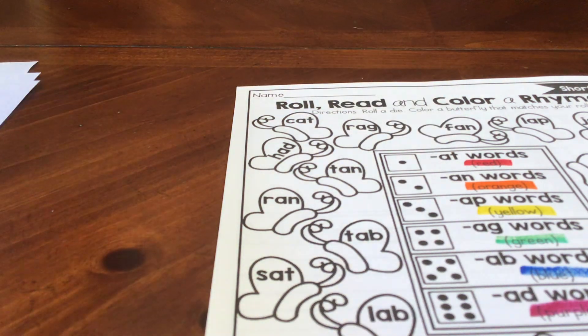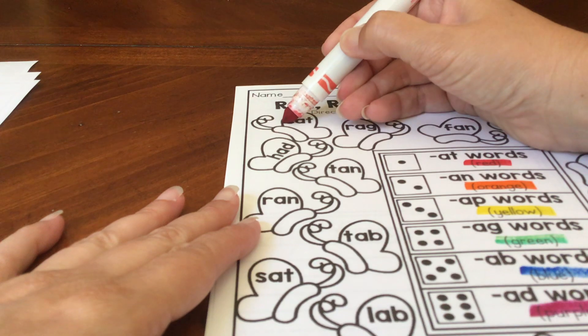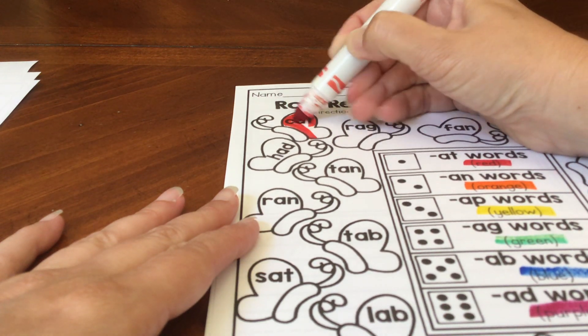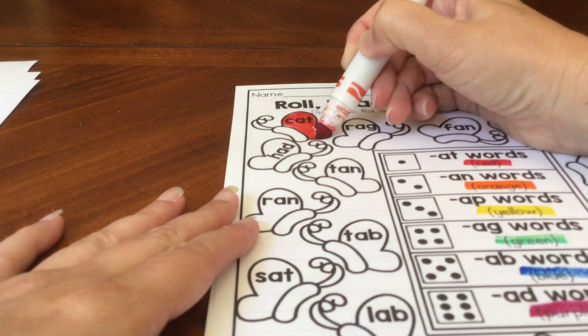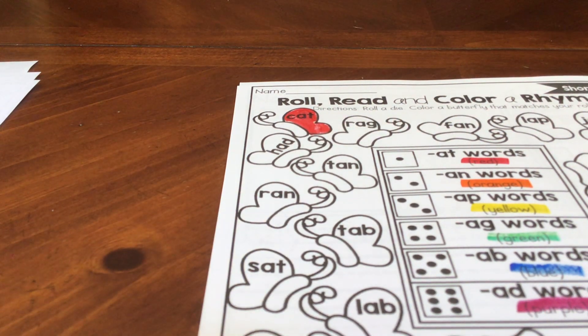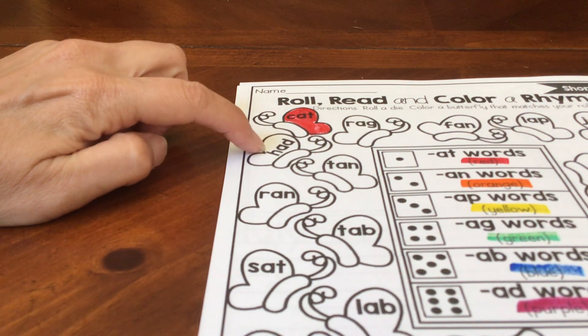Cat. Does that rhyme with at? Yes, it does. So I can color that butterfly red. You could go through and find all the other at words and color them all red if you want to. Or we can move to the next word right here.